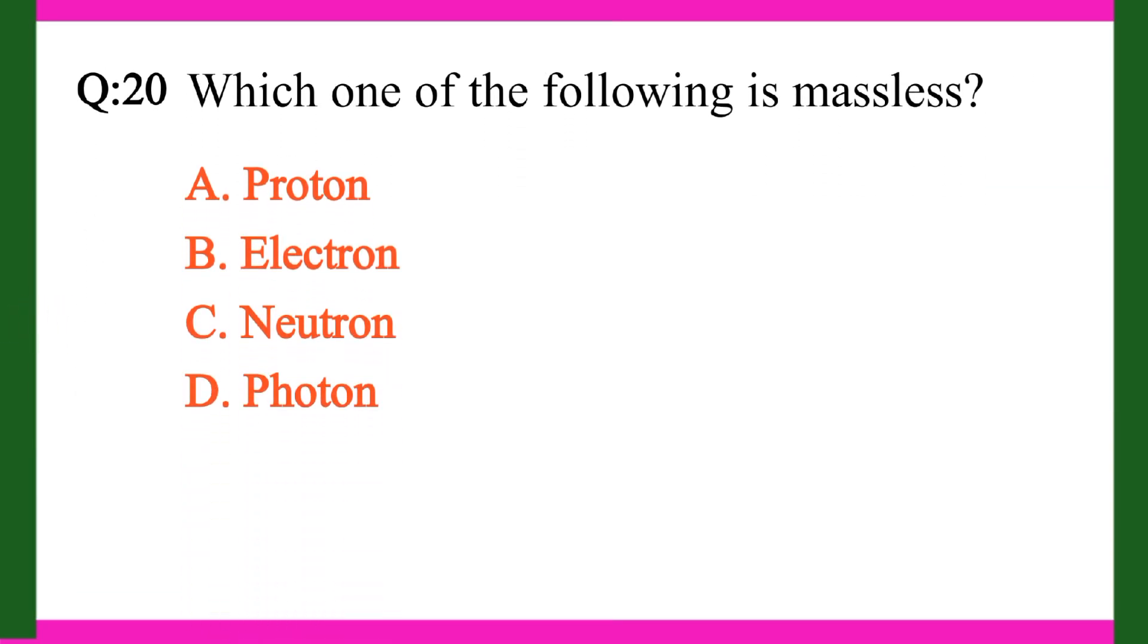Question 20. Which one of the following is massless? A. Proton. B. Electron. C. Neutron. D. Photon. Right answer is D. Photon.